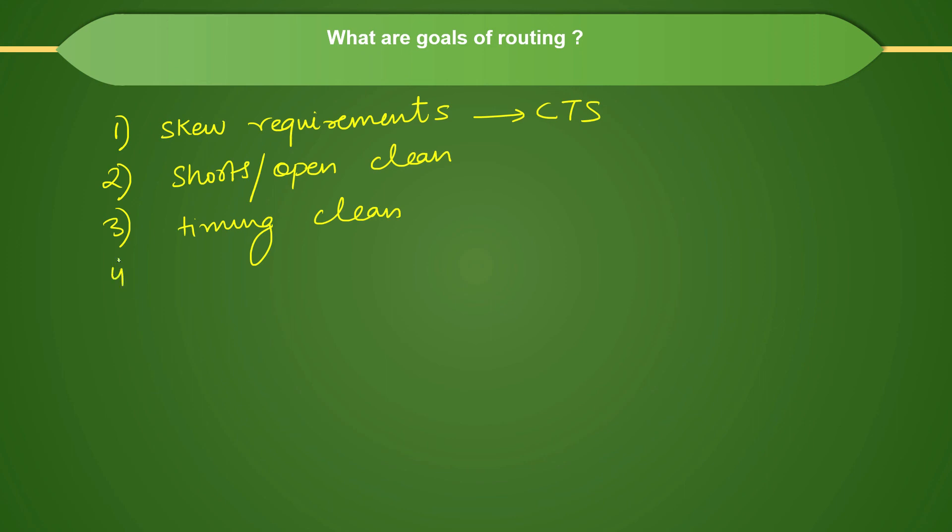And then we have to see for cap and tran for data and clock both. So data and clock both we have to check that our cap and tran are proper and within the limits. And then you have to also see that your layout geometry should meet the current density specification. That is the part of power team. So there is a tool called Redhawk that they use and they have to check for that, that your power requirements are also meeting while doing the routing.